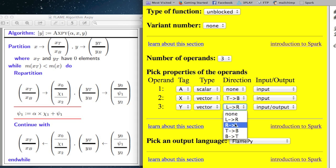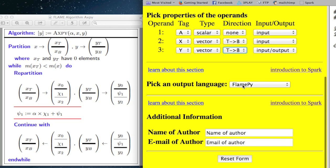Then we need vector y, which is a vector. We march through it from top to bottom, and it's both input and output because vector y is going to be overwritten by alpha x plus y. The output we're going to choose is FlamePy. I'll put in my name as the author.